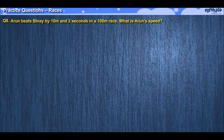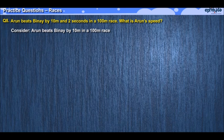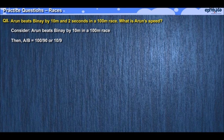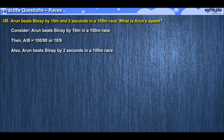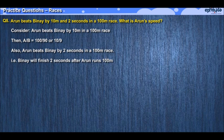Consider the next problem. This is slightly different in that we are given the margin of victory both in terms of distance and time. Arun beats Pinay by 10 meters in a 100 meter race, which means that the distances run by them in the same time would be 100 and 90. So A/B, the ratio of speeds, must be equal to 10 upon 9. However, it also mentions that the margin of victory in time is 2 seconds, which means that when Arun finishes, Pinay would be behind him and hence would finish the last 10 meters in 2 seconds.